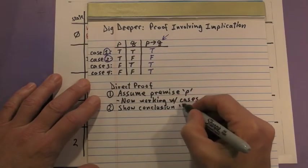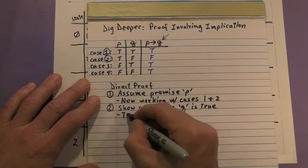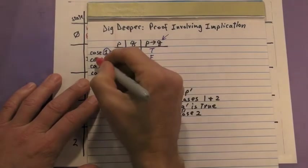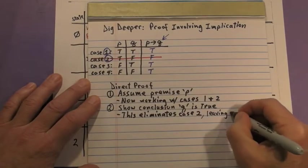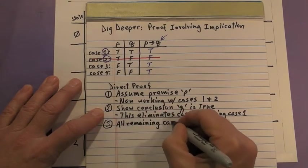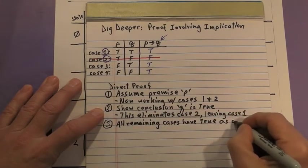Then, we show conclusion Q to be true, which eliminates case 2 from the truth table, leaving us with case 1. Now, all remaining cases in the truth table have true as their outcome.